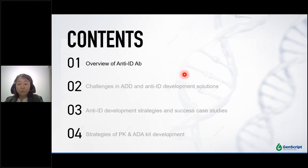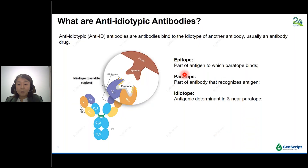Let's start with an overview of anti-idiotypic antibodies. Anti-idiotypic antibodies, also called anti-ID antibodies, are antibodies that bind to the idiotopes of another antibody, usually an antibody drug. Idiotypes can be defined as a specific combination of idiotopes present within the antibody complementarity determining regions. A single idiotope is a specific region within an antibody variable region which binds to the paratope of a different antibody. The paratope can bind directly with the epitope of the antigen, so an idiotope can be considered almost synonymous with an antigenic determinant of antibodies.